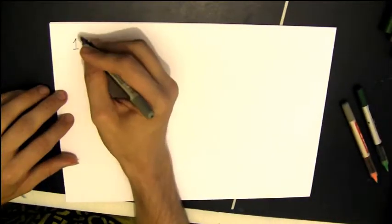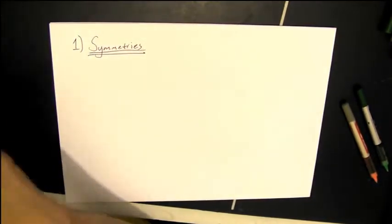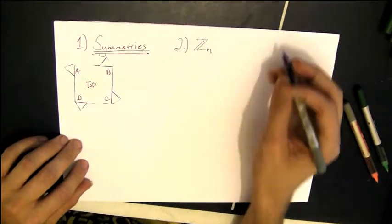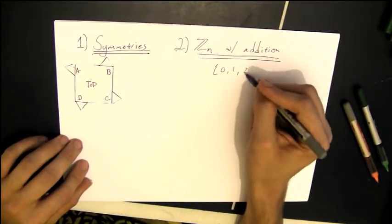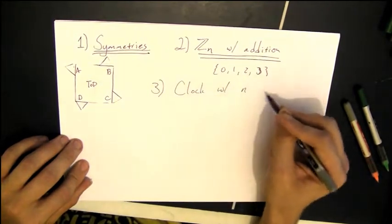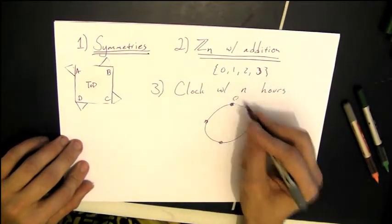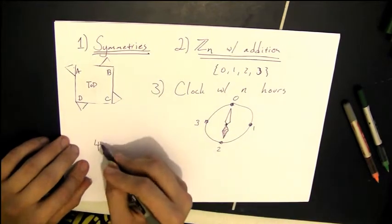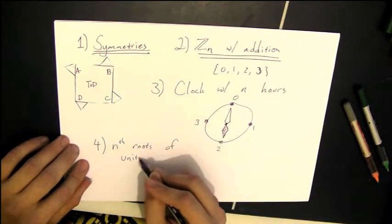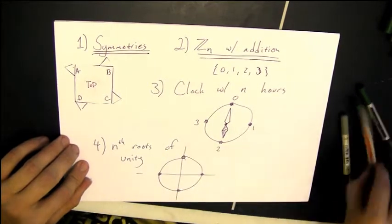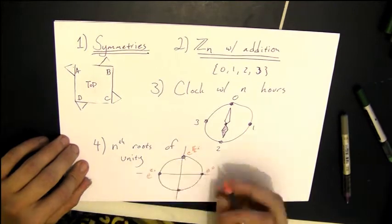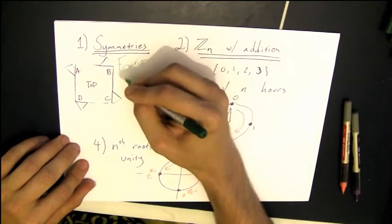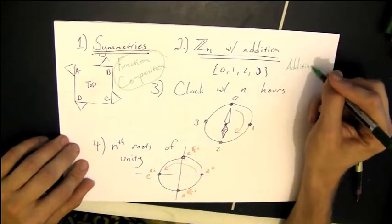So now we've seen four different sorts of versions of something that seems really similar in all of these cases. We've got our symmetries of the bumpy square. We've got our Z4 with addition. We've got our clock with n hours. And we've also got our complex numbers. So in each of these different cases, the operation was something different. But we're getting something that's somehow the same. With our symmetries, we were looking at composition of functions. With our Zn, we were looking at this sort of funky form of addition. With our clock, we were looking at rotation or something, spinning the arms around. And finally, with our nth roots of unity, we're looking at multiplication.